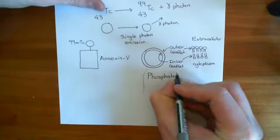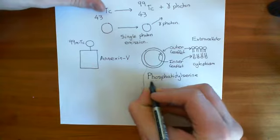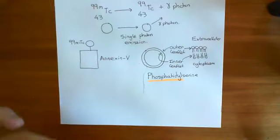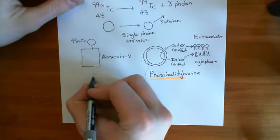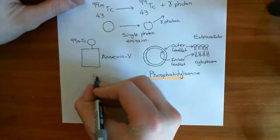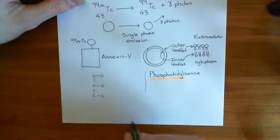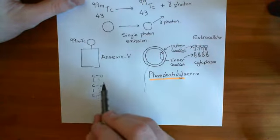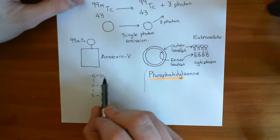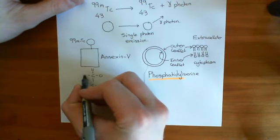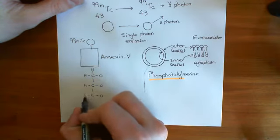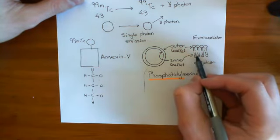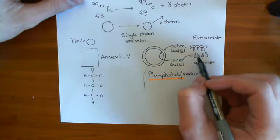Let me show you briefly the structure of phosphatidylserine. The prefix 'phosphatidyl' means phospholipid, and I'm going to show you the basic structure of what a phospholipid is. Phospholipids are made up of a glycerol molecule — a three-carbon molecule with free hydroxyl groups on each carbon. In phosphatidylserine, all the hydroxyl groups of glycerol are going to be bound to other things, so they won't have their hydrogens anymore. This basically is the glycerol molecule.